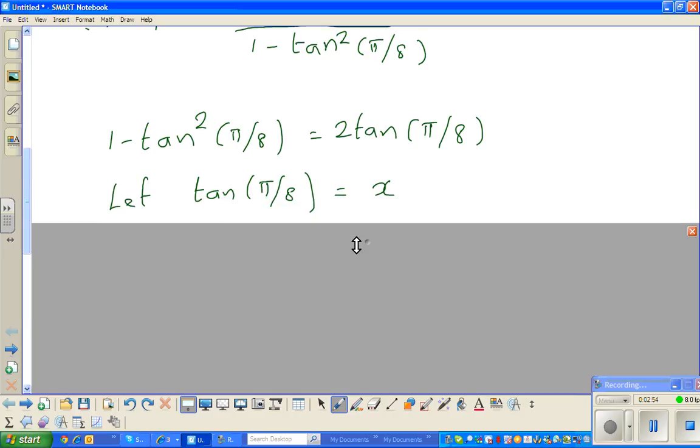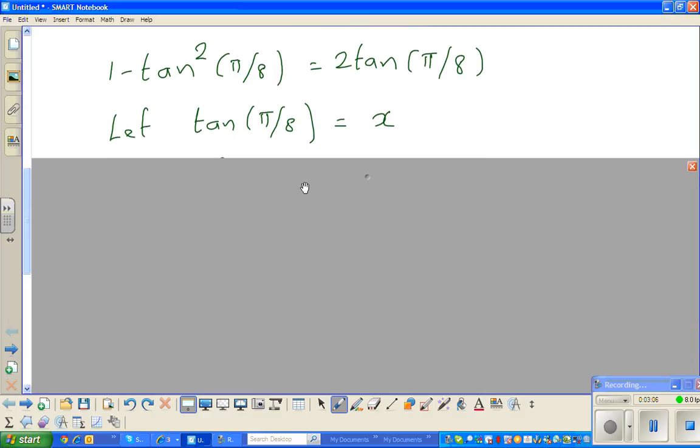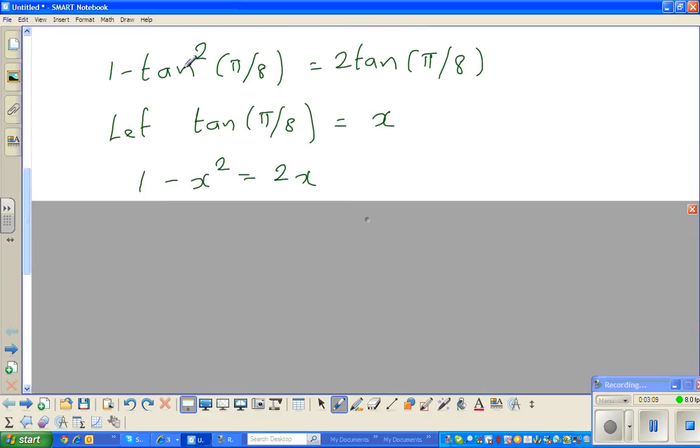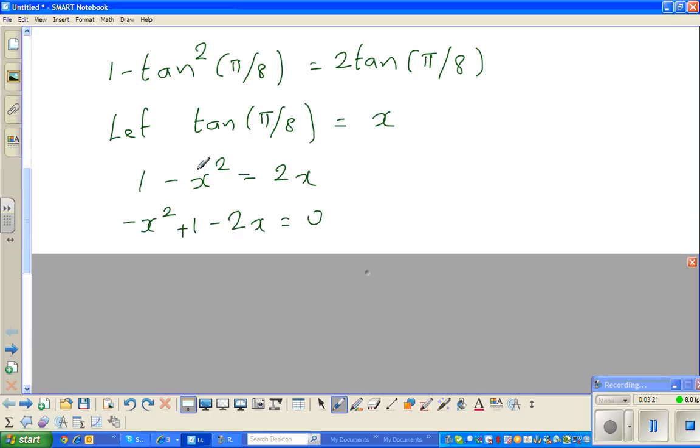The next step is interesting. What have I done is, instead of writing tan π/8 tan squared, I am going to make my life easier. So I can say, let tan(π/8) be x. So what will happen? This will change to 1 minus x squared equals 2x. I hope you can see where I'm going. I am going to make a quadratic equation. So I have rearranged this. I have written this minus x squared plus 1 and I have brought this to the other side. That's minus 2x equals 0.